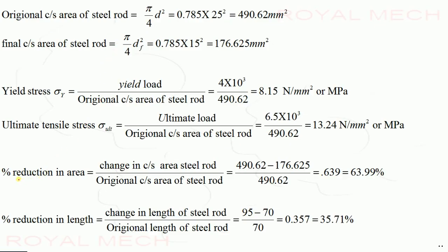Percentage reduction in area: change in cross-section area to original cross-section area. Original area is 490.62 mm², final area is 176.625 mm². (490.62 − 176.625) / 490.62 = 0.6399, so percentage reduction in area is 63.99%.